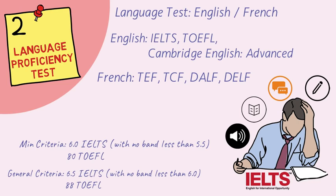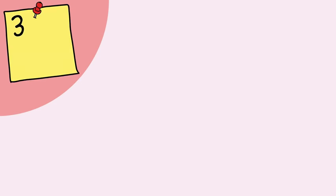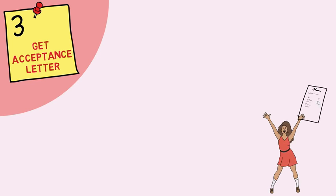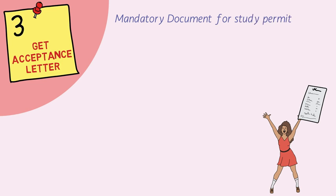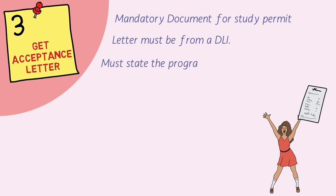Moving on to the third step: getting your acceptance letter. This step is very important because the acceptance letter is the mandatory document for your study permit — without it from a university or college, you cannot get the study permit. The acceptance letter must be from a DLI college. DLI stands for Designated Learning Institution. If the college or university is a designated learning institution, it will be mentioned clearly on their website. The acceptance letter must also state the program of study including the start and end dates.